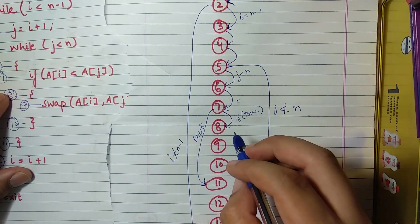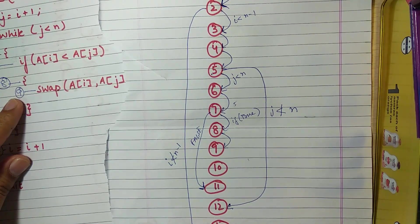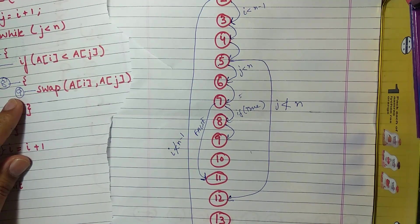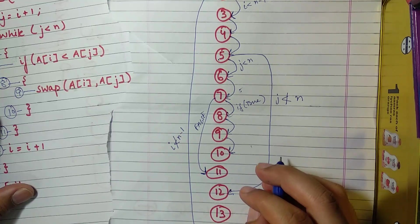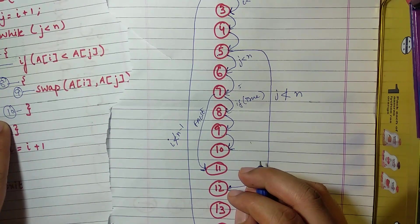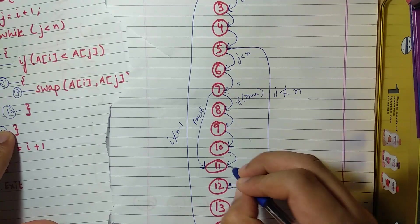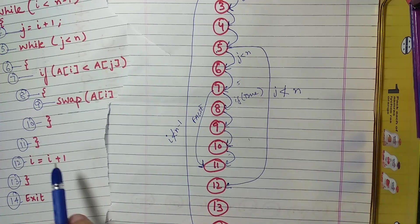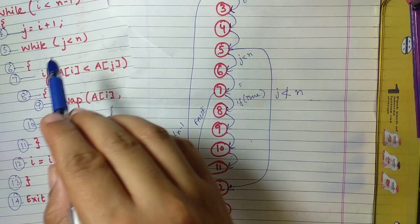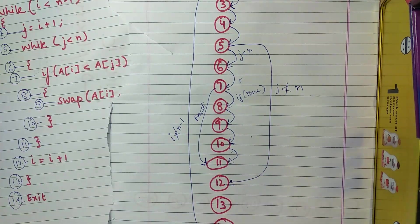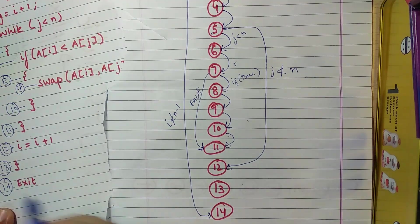From the 8th statement, after the bracket, it will definitely go to the 9th statement. The 9th statement is a swap statement — it is a method that has been called. So the next statement will execute. After the 10th there is an 11th statement, and it will also go over there. After 11th it won't go to 12th, because we have already done the traverse from 5th to 12th. The 12th is also done, so after 12th it will go to 13 for sure.